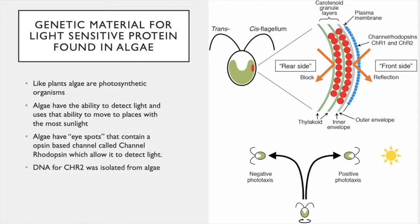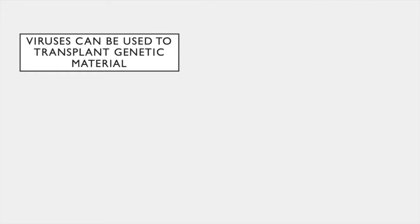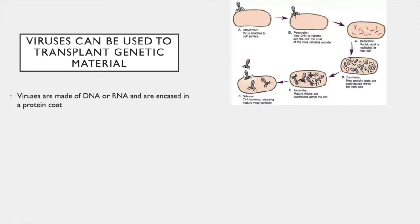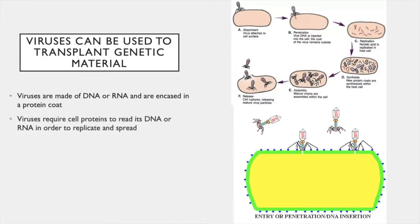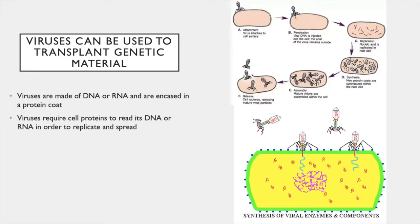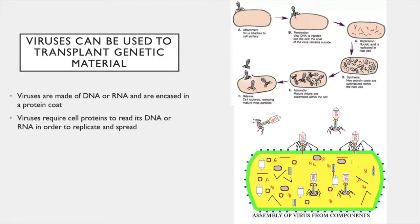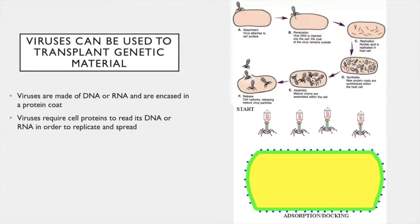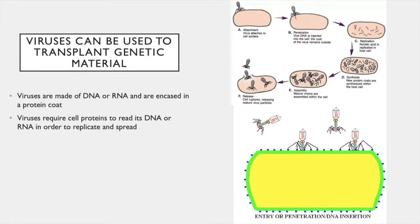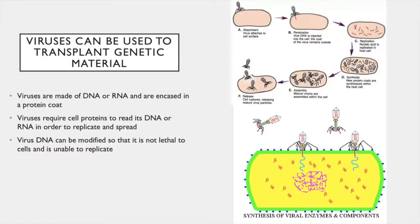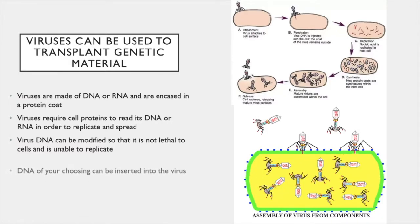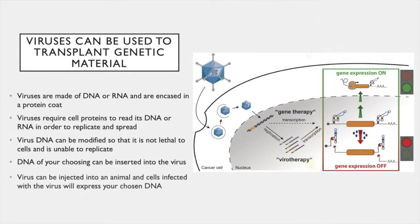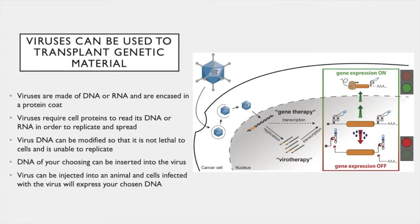The DNA for the channelrhodopsin protein was isolated from algae. To get channelrhodopsin into neurons, we can use viruses. Viruses are made of DNA or RNA and are encased in a protein coat. Viruses require a cell's machinery to read their DNA or RNA in order to replicate and spread. A virus first attaches to the cell and injects its genetic material. The cell's machinery cannot tell the difference between its own DNA and the viral DNA and begins to replicate the virus and make the protein coat. Viruses can be modified so that they are not lethal and cannot replicate. The DNA of your choosing can then be inserted into the virus, which is then injected into an animal so that infected cells express your chosen DNA.